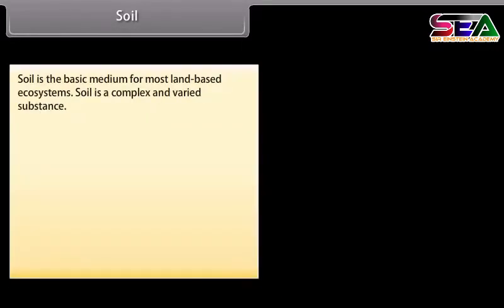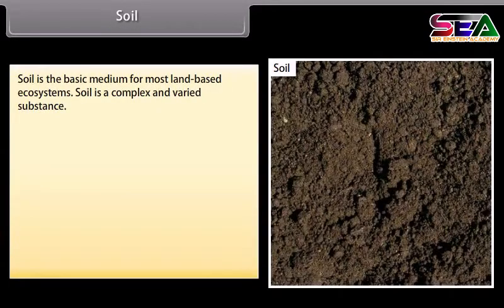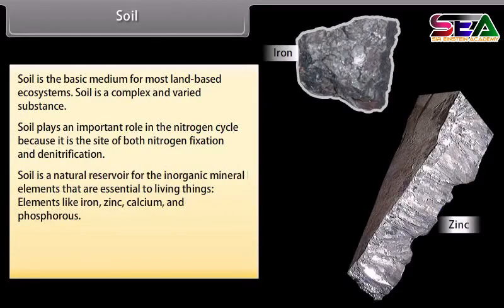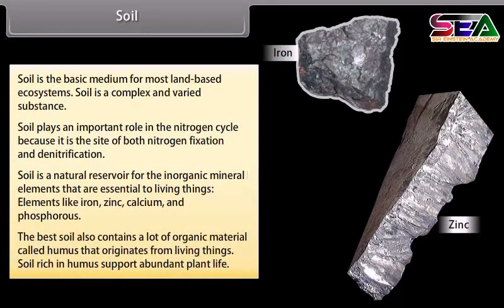Soil is the basic medium for most land-based ecosystems. It is a complex and varied substance. Soil plays an important role in the nitrogen cycle because it is the site of both nitrogen fixation and denitrification. Soil is a natural reservoir for inorganic mineral elements essential to living things, such as iron, zinc, calcium and phosphorus. The best soil also contains a lot of organic material called humus that originates from living things. Soil rich in humus supports abundant plant life.